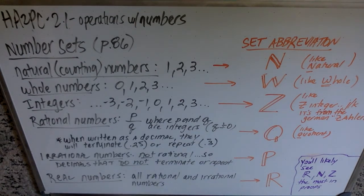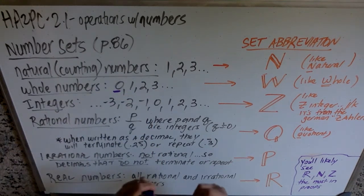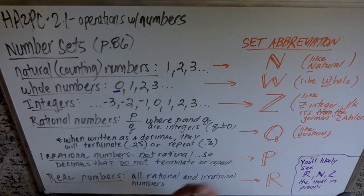The only difference between the natural numbers and the whole numbers is that the whole numbers have zero. So 0, 1, 2, 3, 4, 5, 6, 7, up till forever. And the abbreviation to that set is W, like whole, which again, totally logical and makes sense.